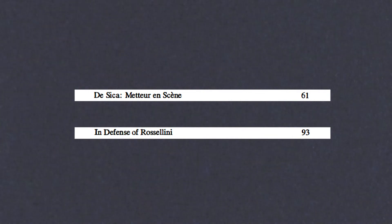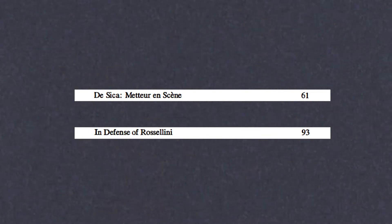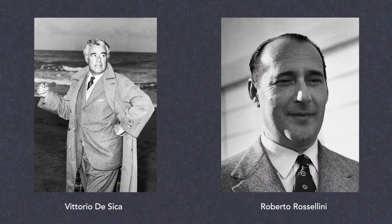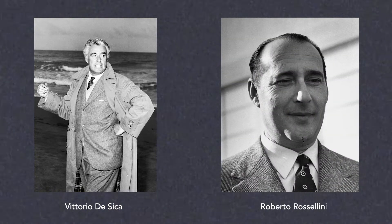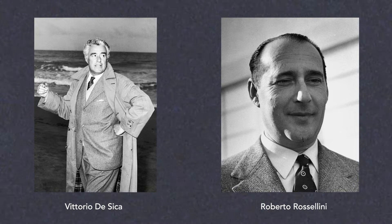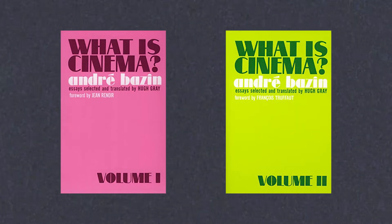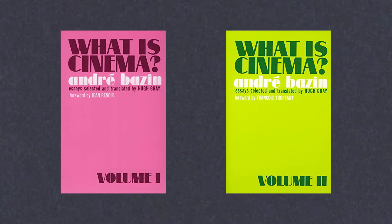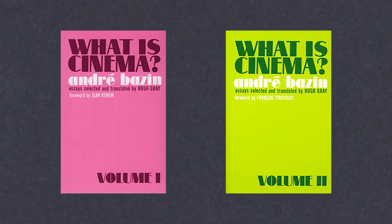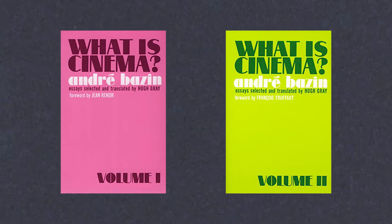Further to this, Bazin also included essays in this volume on key neorealist directors, such as Vittorio De Sica and Roberto Rossellini, and he also wrote pieces on canonical neorealist films, such as Bicycle Thieves, La Terra Trema, and Umberto D. Overall, these two volumes of essays are essential to read for any film student, and most of all those specifically interested in film aesthetics. Bazin not only offers profound insights on cinema, but he also provides one of the earliest commentaries on Italian neorealism, a truly watershed moment in film history.